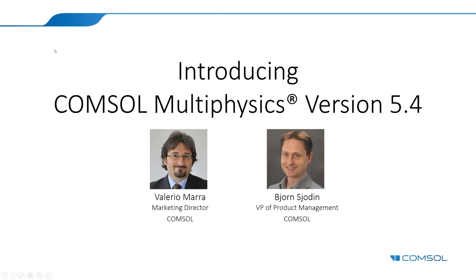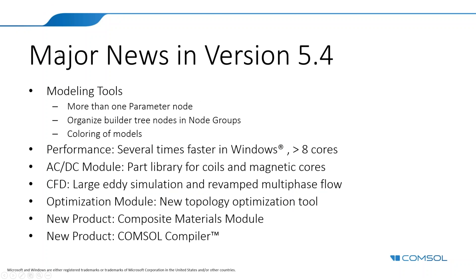Thank you, Valerio. We will start by looking at some of the major news in this release, then go into more detail later. You can now have more than one parameter node in the model builder, so you can have multiple sets of parameters. This makes it possible to organize your work better. You can also now have something called node groups and organize your model builder tree nodes into folders.